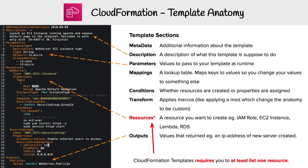You can write whatever you want in the description. I've described this template to launch an EC2 instance running Apache, and it's hard-coded to us-east-1. Then you have parameters, which is something you're going to use a lot — defining what inputs are allowed to be passed into this template at runtime.